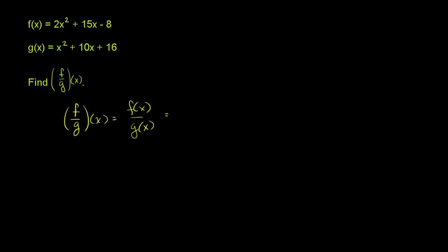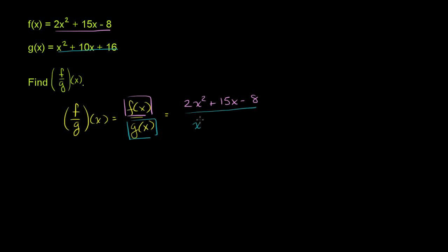So this is going to be equal to f of x, which is 2x squared plus 15x minus 8, all over g of x, which is x squared plus 10x plus 16. You could leave it this way, or you could try to simplify this by factoring the numerator and denominator to see if both are divisible by the same expression.